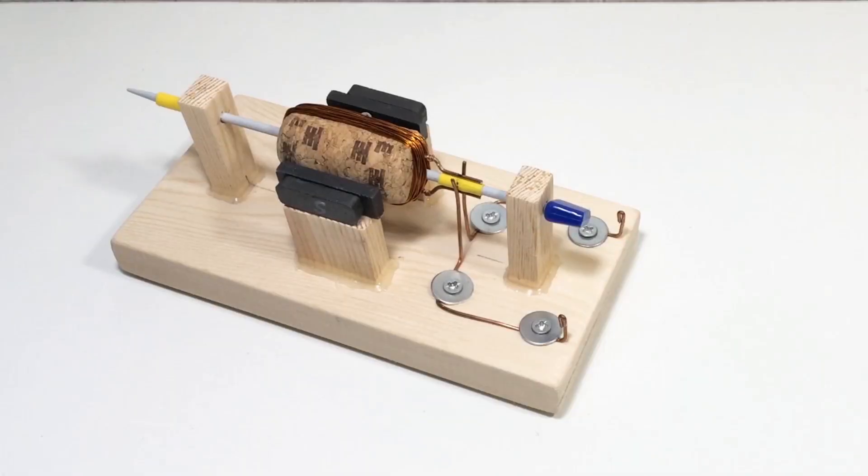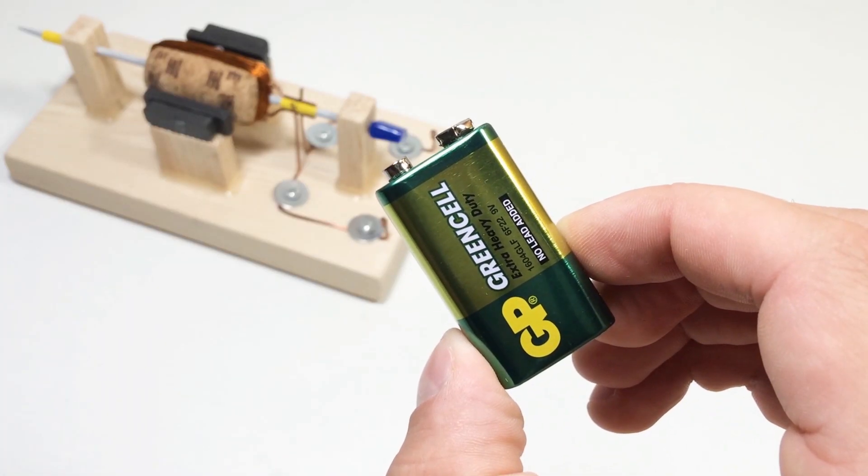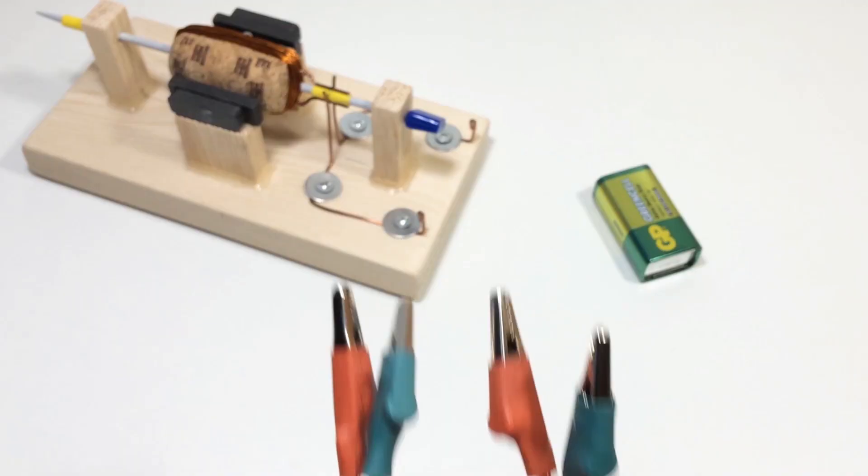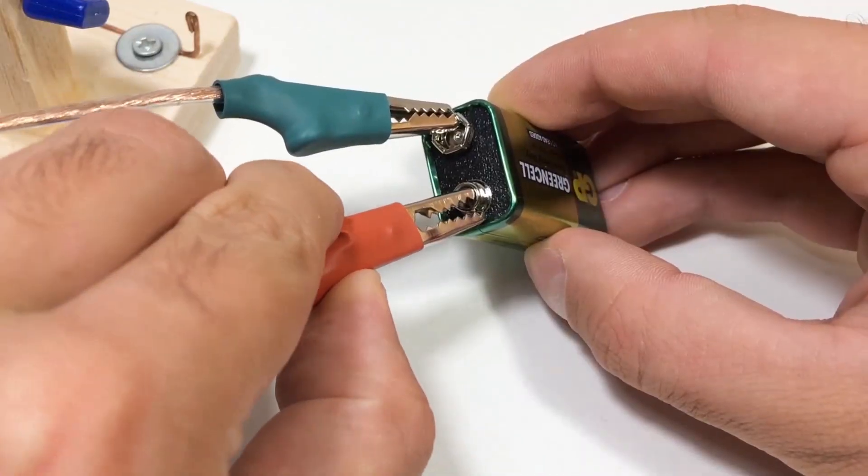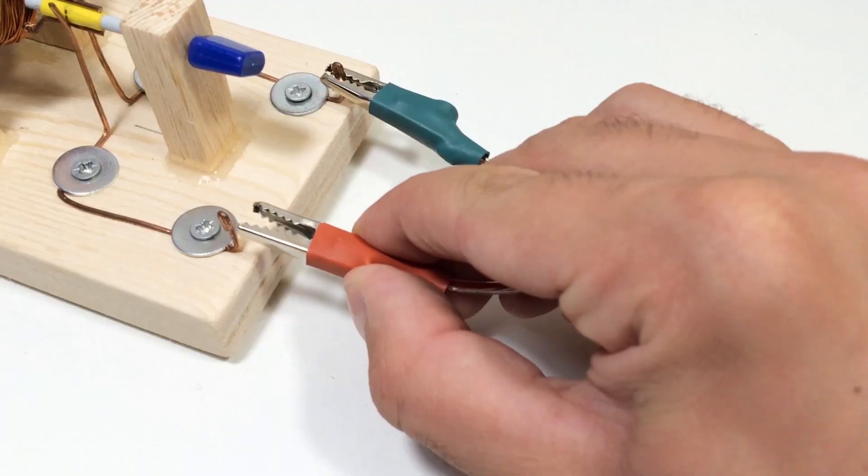Finally, the power supply. Connect the contacts to your 9-volt battery or drill battery. And here comes the magic moment. The coil instantly begins to spin. You're literally watching electricity turn into motion.